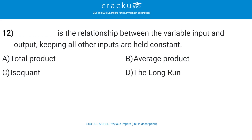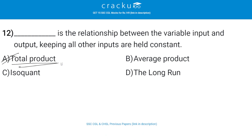Blank is the relationship between the variable input and output, keeping all other inputs constant. The correct answer is A, total product. The relationship between the variable input and output keeping all other inputs constant is referred to as the total product of the variable input.